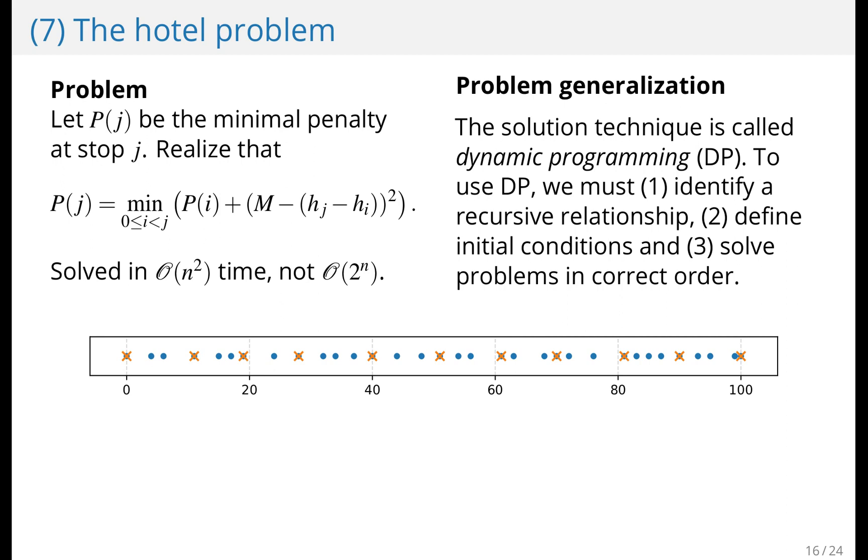And if you use this, then you can solve it in n squared time, not two to the power of n. So you have to identify this recursive relationship, and you have to have overlapping subproblems and this optimal substructure to apply dynamic programming.